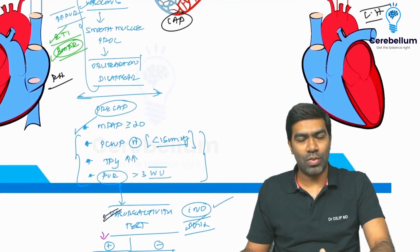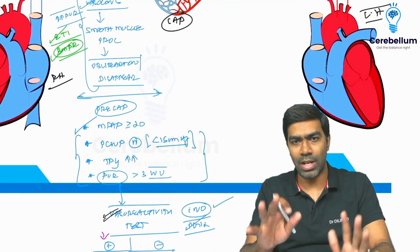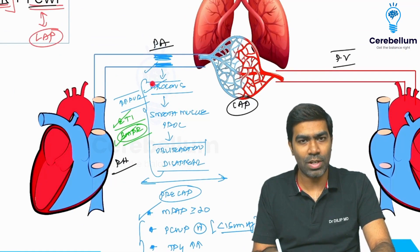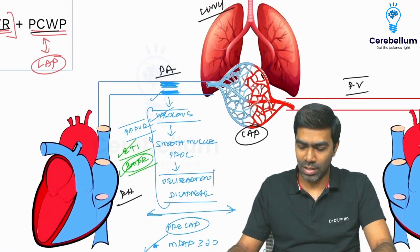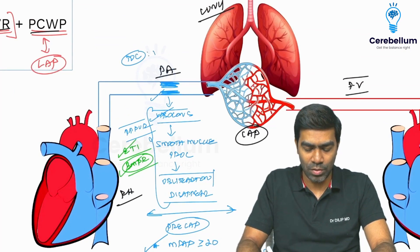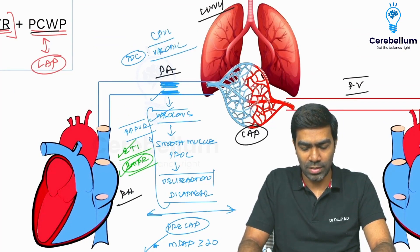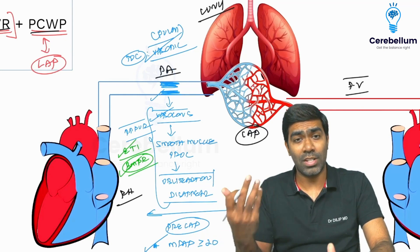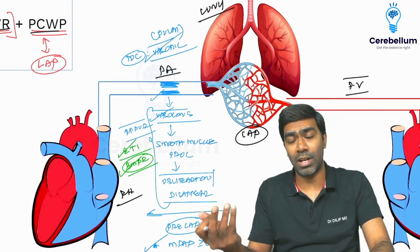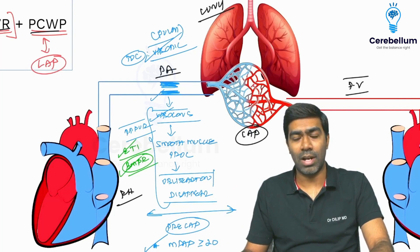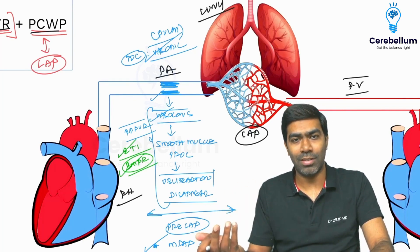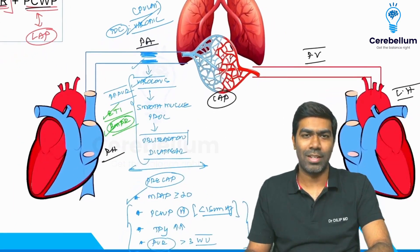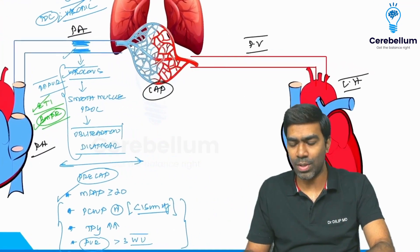The treatment of choice for type 1 pulmonary artery hypertension is pulmonary vasodilators, because the primary trigger is vasoconstriction. Apart from CCBs, we have phosphodiesterase inhibitors like sildenafil and tadalafil, endothelin receptor antagonists like bosentan and ambrisentan, and PGI2 analogs like treprostinil and iloprost. Vasoreactivity testing is very important — don't forget it for exams.